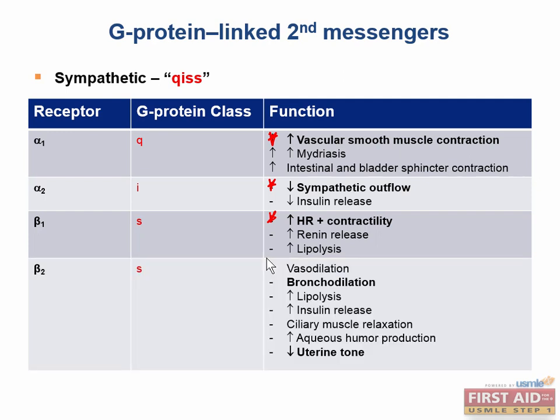The beta-2 receptor is of the G-sub-S class, and it has many functions. The major functions you should know include vasodilation, bronchodilation, increased lipolysis, increased insulin release, ciliary muscle relaxation, increased aqueous humor production, and decreased uterine tone. This last property is the basis for many drugs that delay childbirth. Beta-2 agonists, such as terbutaline, can act as a tocolytic agent to decrease contractions during premature labor.